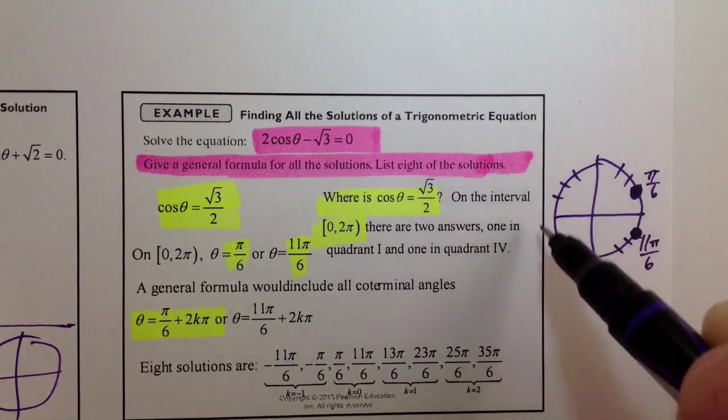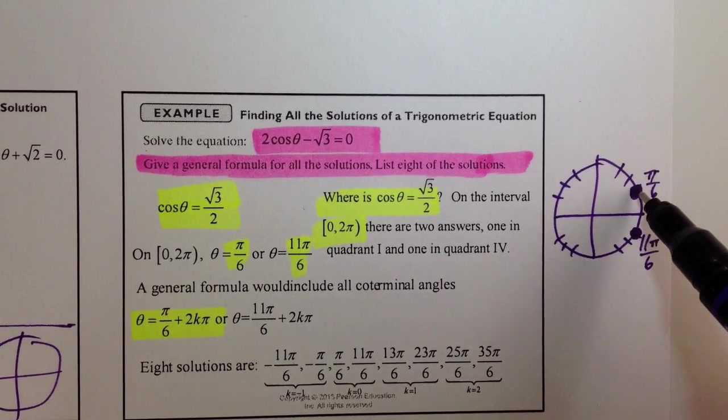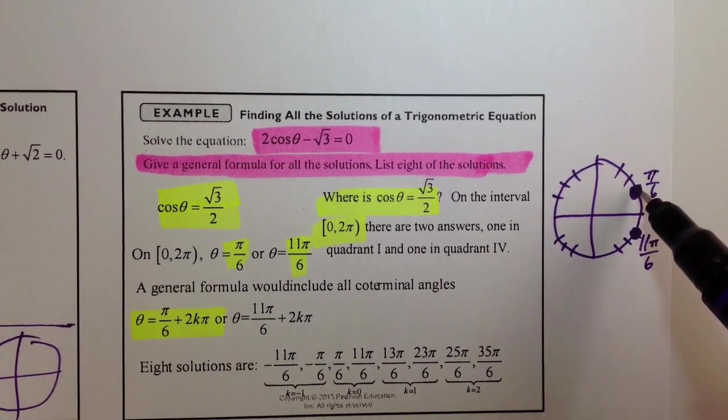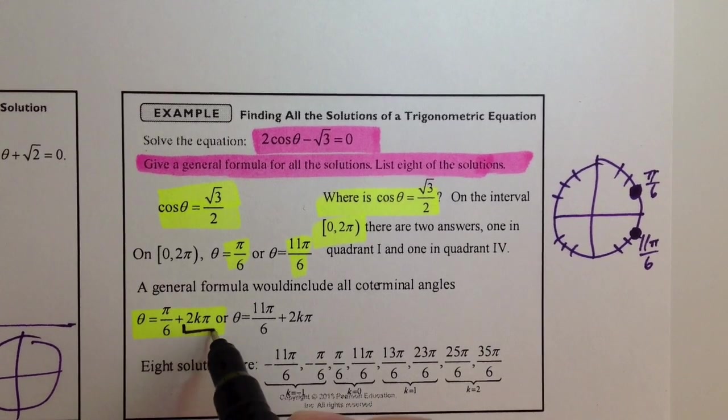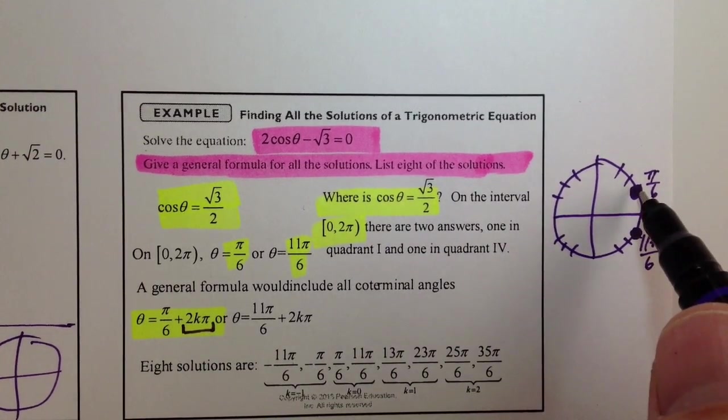12 pi over 6, 13 pi over 6, and you get 25 pi over 6, and so forth. The cosine of the angle is always radical 3 over 2. So you have to include all of those, and all you have to do is, remember,